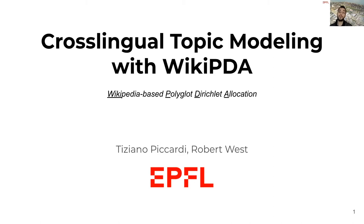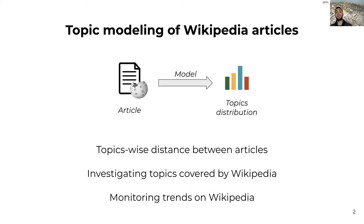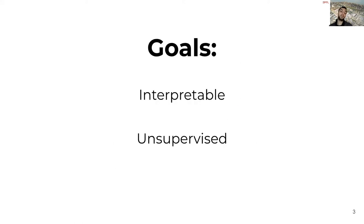WikiPDA is a new method to extract cross-lingual topics from Wikipedia using LDA. A very common task for a researcher that works with content from Wikipedia is to model the topic of its articles. Having a topic distribution enables a researcher to work on tasks that involve measuring the distance between articles, investigate how Wikipedia covers different subjects, and monitor evolving trends.